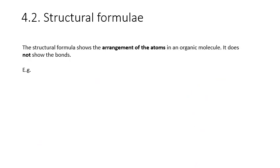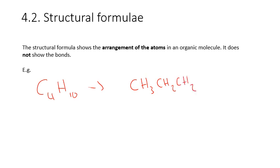The last two — structural formulae and displayed formulae — are often confused. Structural formula shows the arrangement of atoms in the molecule without showing any of the bonds. So if we have butane, C4H10, we show the structural formula as CH3, CH2, CH2, CH3. The first carbon has three hydrogens attached, the second has two, the next has two, and the last has three. If we count up the atoms, we have four carbons and 10 hydrogens. That is our structural formula.